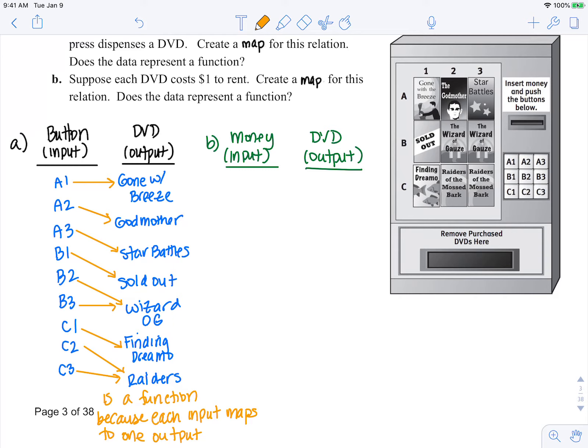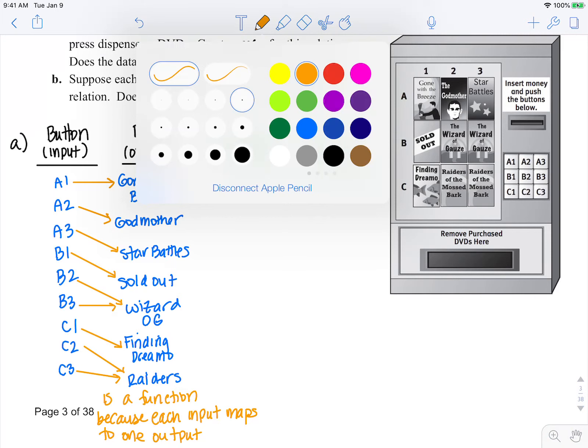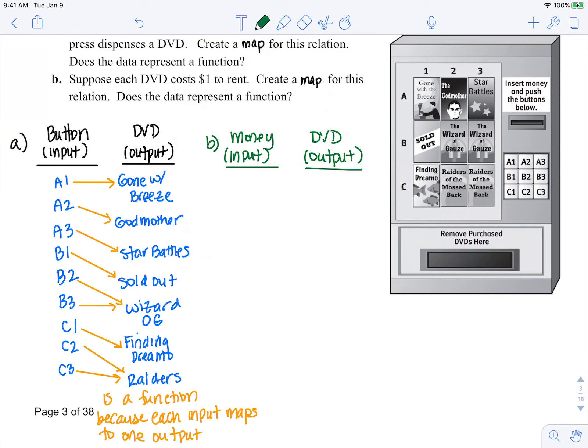Suppose each DVD costs $1 to rent. Create a map for this relation. Does the data represent a function? So your input is how much money you can pay, and that's only one dollar. It's the only amount you can pay. Your output is all of these same DVDs.